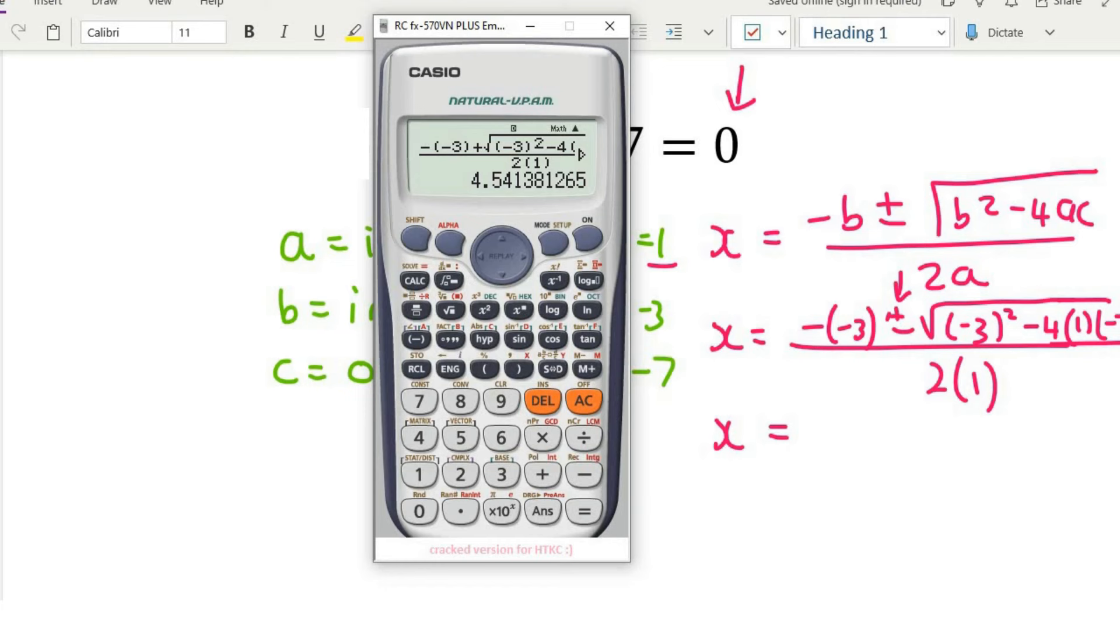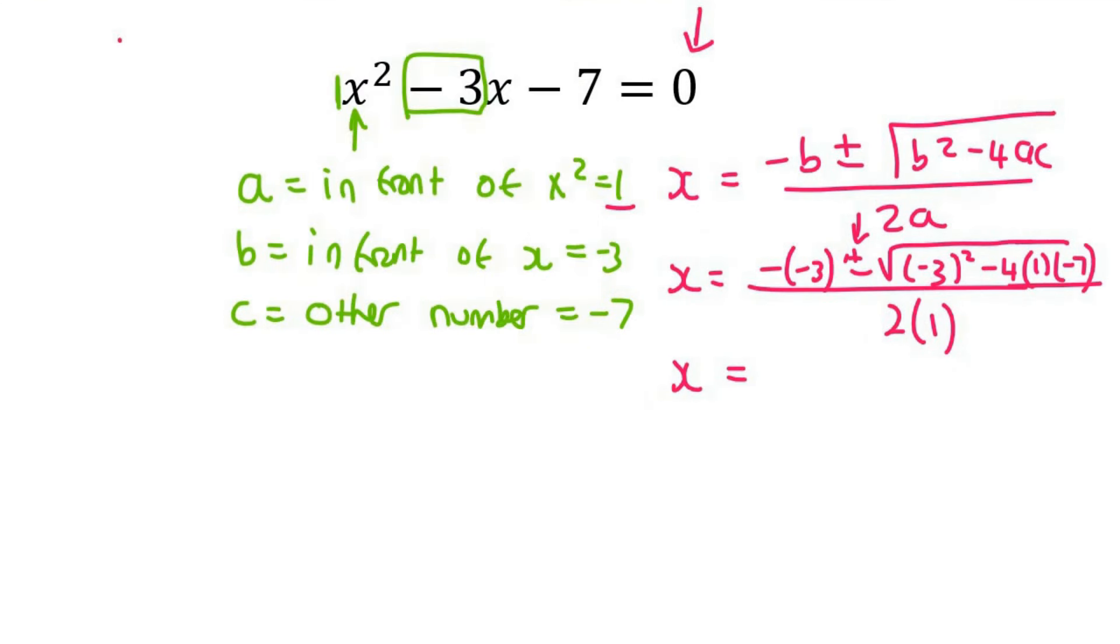I'm not going to write it down just yet. Then what I do is I go backspace on my calculator, and then I change this one to a minus, and then I push equals, and there's my next answer: minus 1.54. And so our two answers that we found were 4.54 and then the other one was negative 1.54.